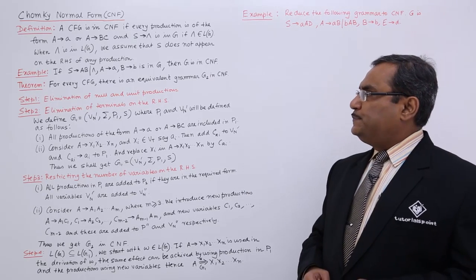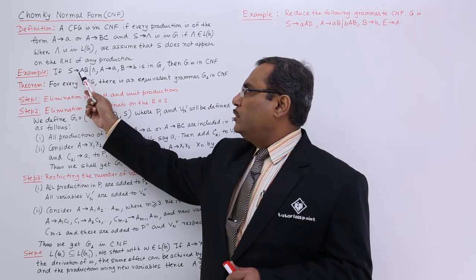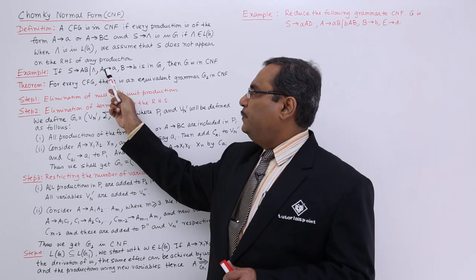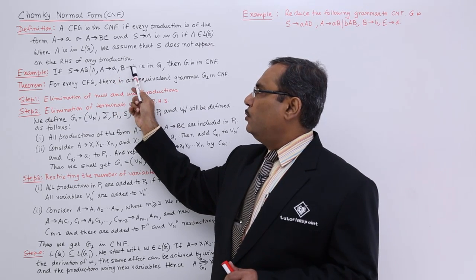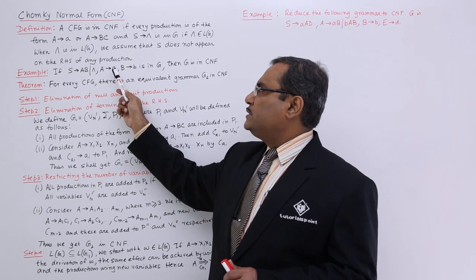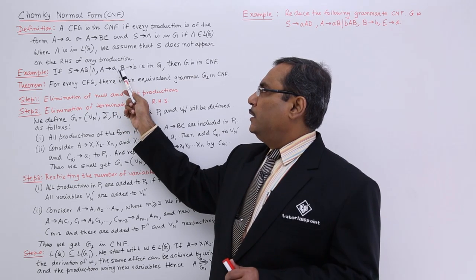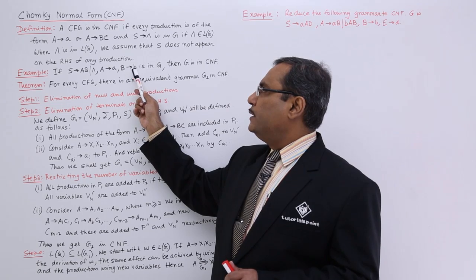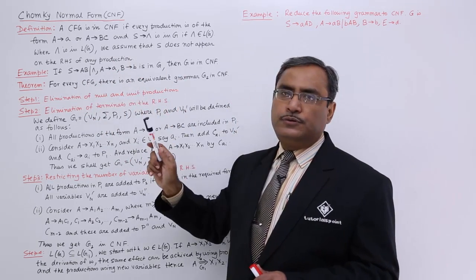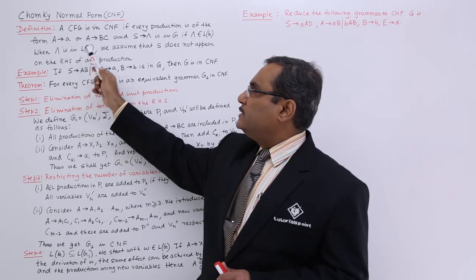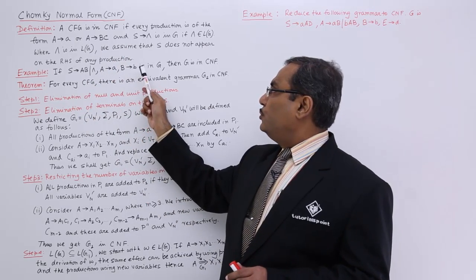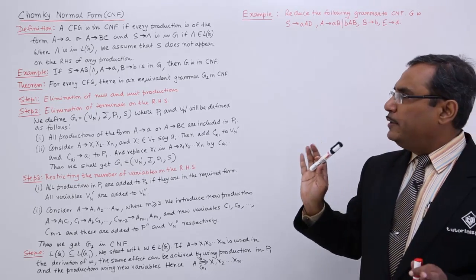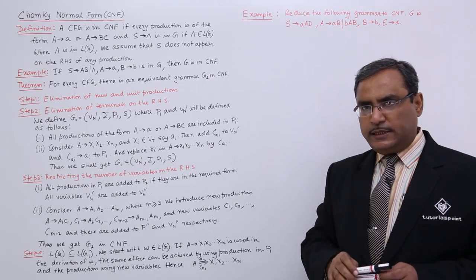Example: S produces AB — non-terminal produces non-terminal non-terminal. S produces kappa — checking whether S appears on the right hand side, no. Capital A produces small a — non-terminal produces terminal. Capital B produces small b — non-terminal produces terminal. All of them are satisfying the CNF rules, so this grammar G is in CNF. So we have given one example and the definition has been discussed.